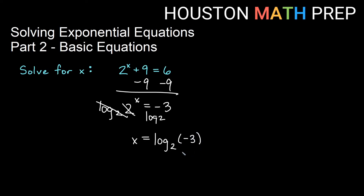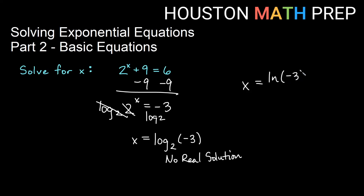But we cannot take a logarithm of a negative number — this is not possible. So there is no real solution. Thinking back to 2 to the x equals negative 3: there's no way to raise 2 to a power and get a negative number, because even negative powers of 2 give fractions, not negative numbers. If you try change of base — natural log of negative 3 over natural log of 2 — you're still taking a log of a negative number, which is undefined. The calculator will reject it. So the answer is no real solution.